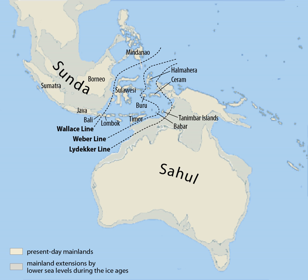Because sea level has been 30 meters or more lower throughout much of the last 800,000 years, the current state of Borneo, Java, and Sumatra as islands has been a relatively rare occurrence throughout the Pleistocene. In contrast, sea level was higher during the late Pliocene, and the exposed area of Sundaland was smaller than at present. During the last glacial maximum, sea level fell by approximately 120 meters and the entire Sunda Shelf was exposed.